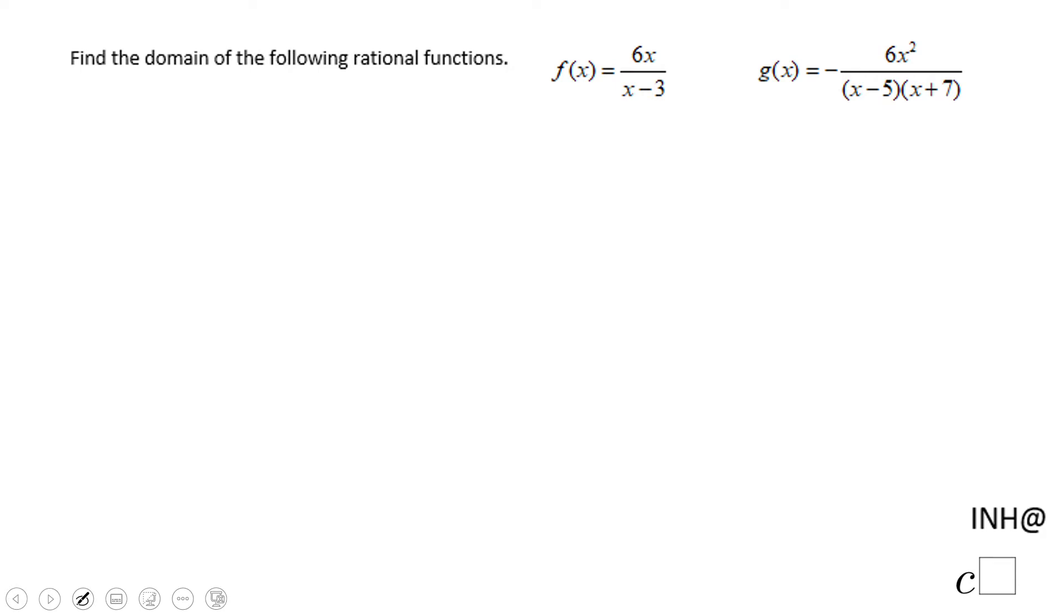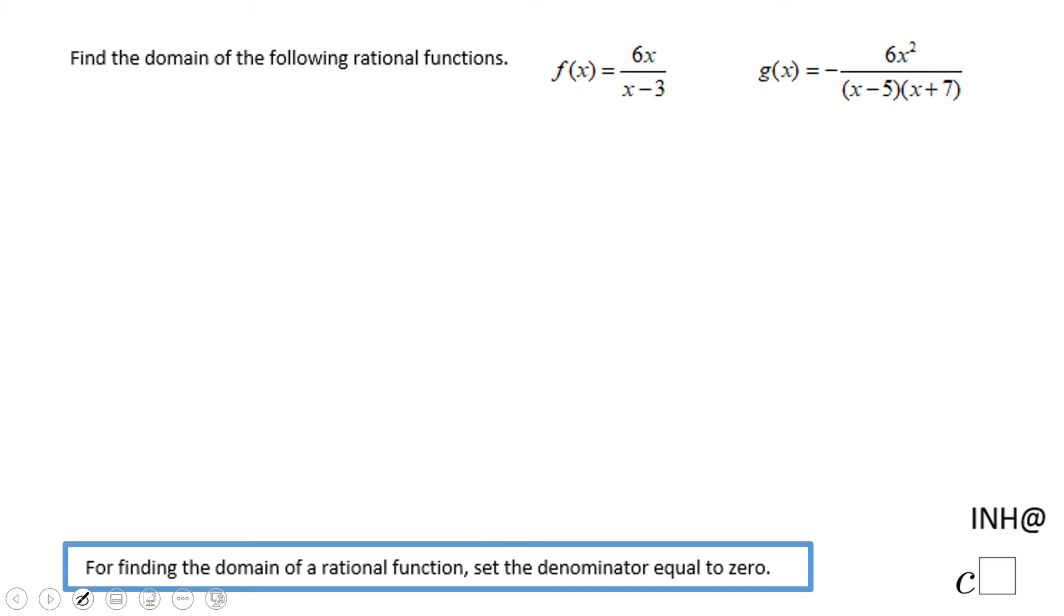The first rational function is f of x equals 6x over x minus 3. For finding the domain we need to set the denominator equal to zero.